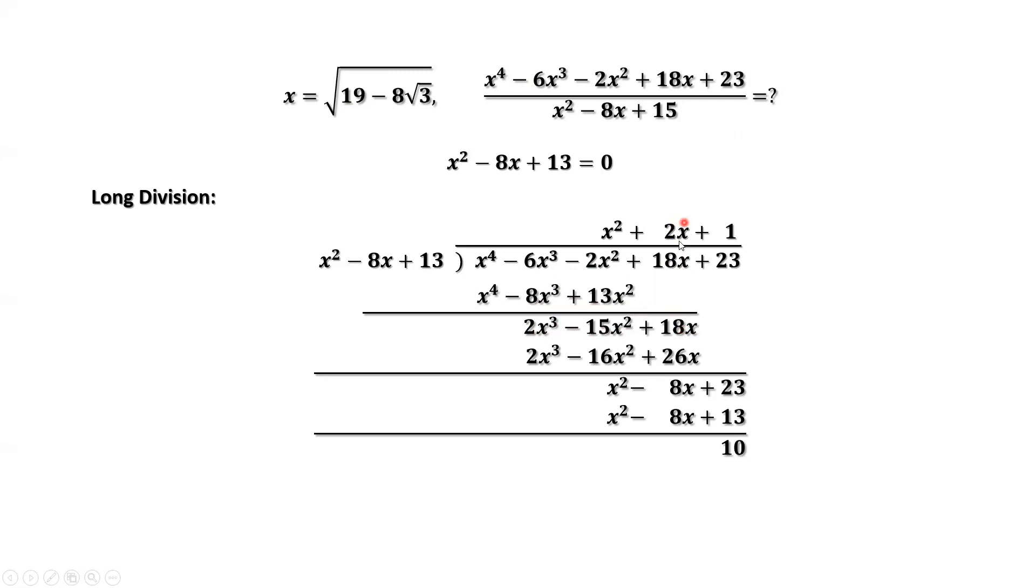Move to this digit, because the leading constant is 2 here. 2x times x squared is 2x to the power 3. 2x times negative 8x equals negative 16x squared. 2x times 13 is 26x. This cancelled. We have x squared. This minus this, we have negative 8x, drop 23 here. Here the constant is 1. Put 1 here. This number minus this number equals 10.